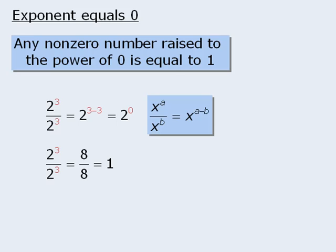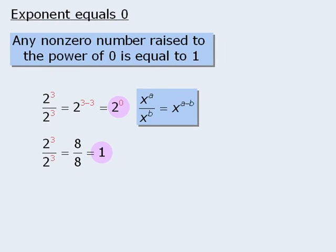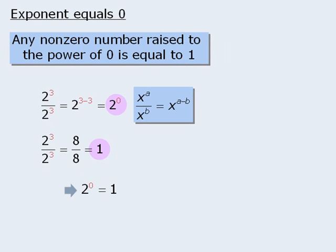So when we evaluated 2 to the power of 3 over 2 to the power of 3 one way, we got 2 to the power of 0. And when we evaluated it another way, we got 1. As such, it must be true that 2 to the power of 0 equals 1. We can generalize this result to conclude that any non-zero number raised to the power of 0 must equal 1.